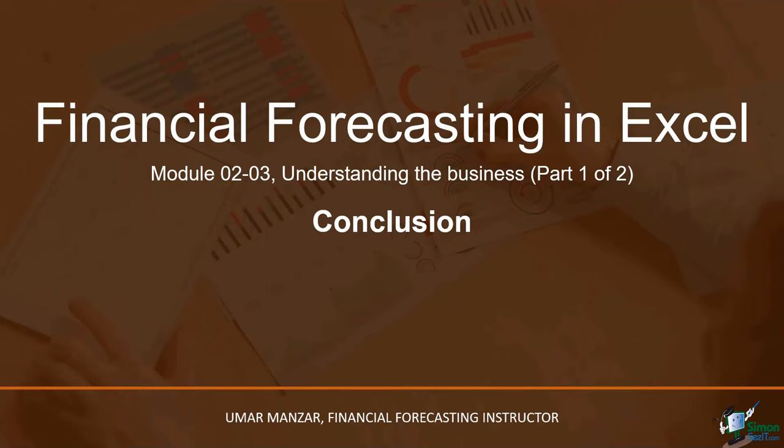This concludes module 203. To summarize, we discussed the dimensions of understanding a business, how to understand the business, and I also introduced you to the ABC company. We went through the financial statements of this company to get a general sense of the business. In the next module, we will continue with our discussion of understanding the business.